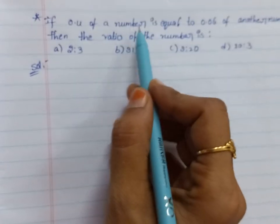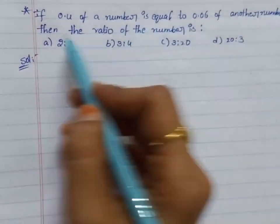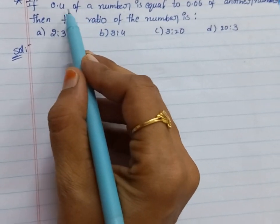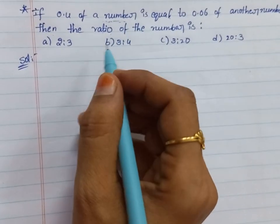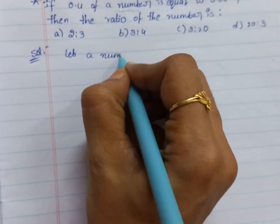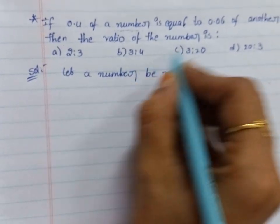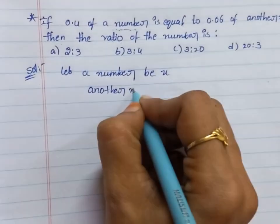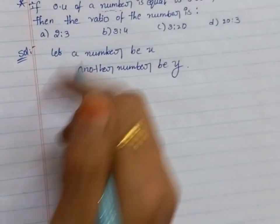If 0.4 of a number is equal to 0.06 of another number, then the ratio of the numbers is... They are asking for the numbers, which we don't know. Let a number be x and another number be y.